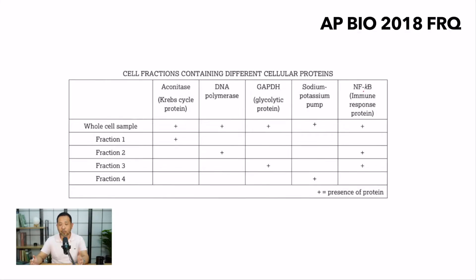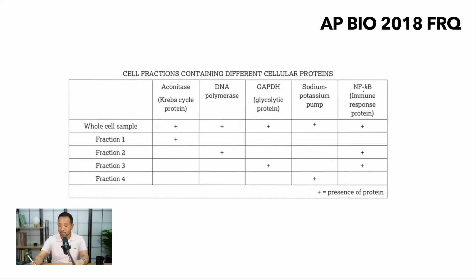This sounds pretty simple, but it's a section of Chapter 6 that a lot of students and even teachers miss. However, in 2018 there was a question like this — the second long-form question on the 2018 FRQ. We're looking at cell fractionation as displayed here, with the whole cell sample, fraction one, fraction two, fraction three, and fraction four. I want to go through this question with you because I want you to understand how significant cell fractionation is in solving it.